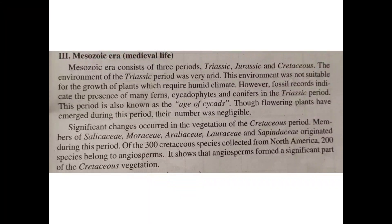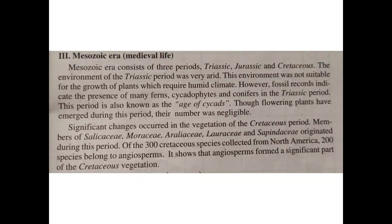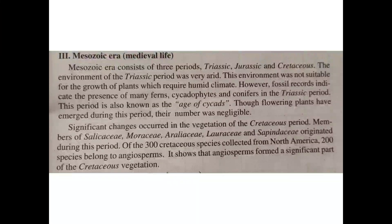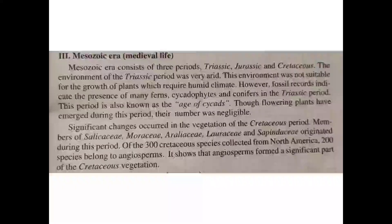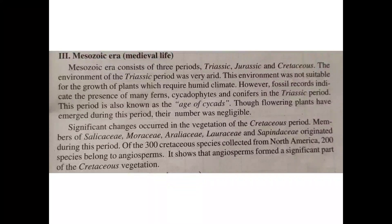Next is the Mesozoic Era, which consists of three periods: Triassic, Jurassic, and Cretaceous. The Triassic period was arid — meaning dry conditions. This environment was not suitable for the growth of plants that required a humid climate. However, fossil records show some forms, including conifers.